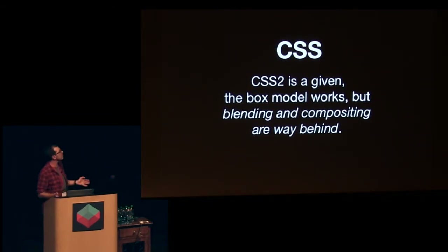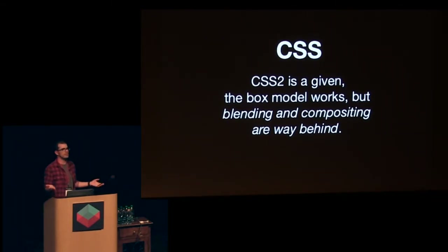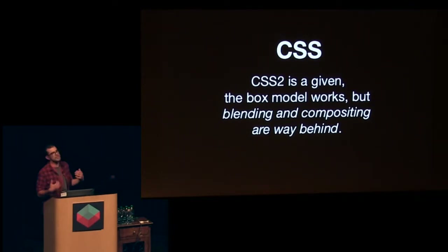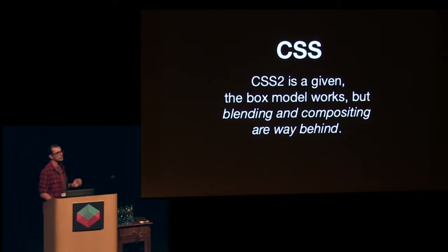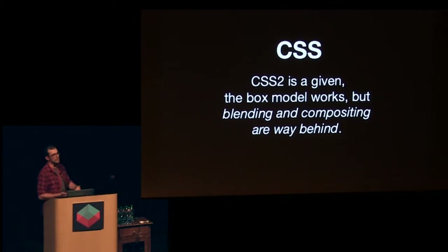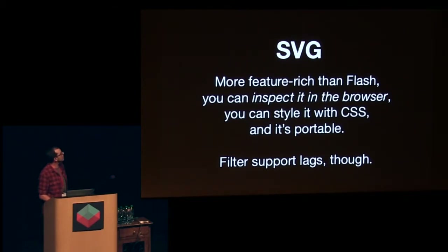CSS2 is just a given now, which is awesome. The box model works if you use box-sizing border-box — my favorite thing in CSS. What Stamen is lacking, maybe what I'm lacking, is proper blending and compositing in CSS. I think this is where the type of stuff we do is going to get really interesting — when people who know CSS can change the way that things blend on the page. SVG is just eons more feature-rich than Flash could ever be as far as vectors go. Inspecting on the browser is a godsend. You can style it with CSS and it's portable. SVG has really become mature in the last couple of years, thanks to browsers supporting it.